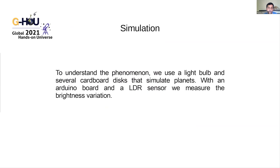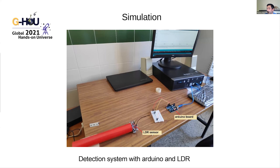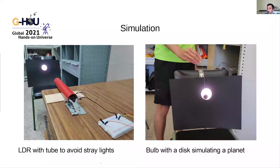To help students understand the phenomenon, we use a light bulb and several cardboard disks that simulate planets. With an Arduino board and an LDR sensor, we measure the brightness variation. Here we can see the computer with the Arduino board and the LDR sensor to detect the change in brightness. We have a tube with the LDR to avoid stray light from the classroom, and in the photograph on the right we can see a disk simulating a planet in front of the star.